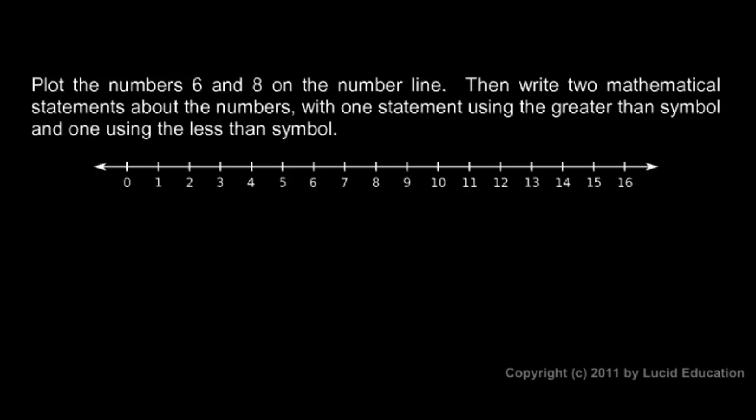Now here's an example. We're told to plot the numbers 6 and 8 on the number line, then write two mathematical statements about the numbers—one using the greater than symbol and one using the less than symbol. The number 6 is right here so we put a little dot on the number line next to the 6, and the number 8 is right there.